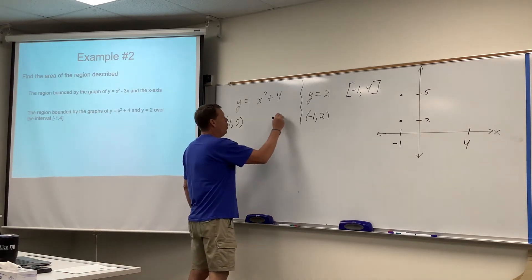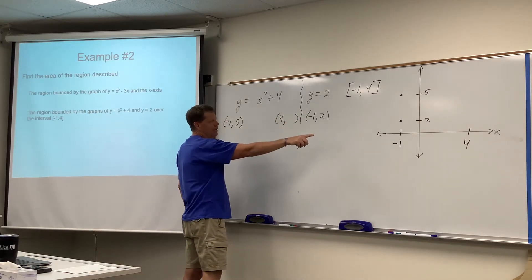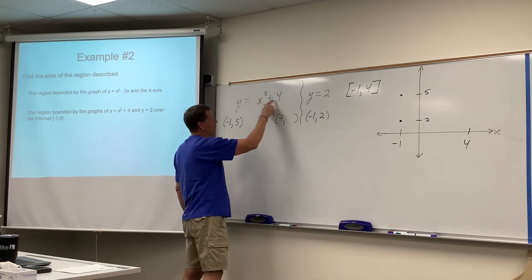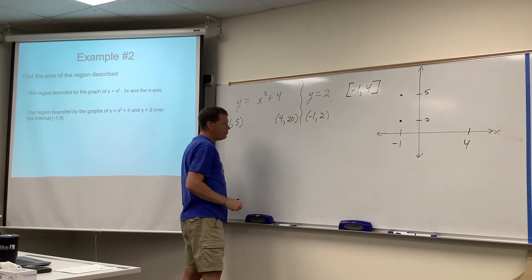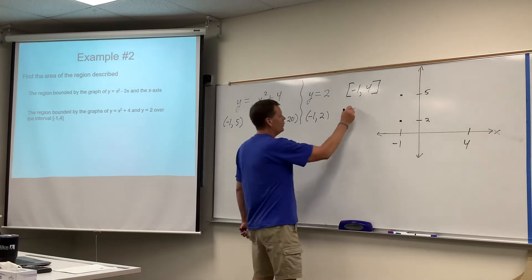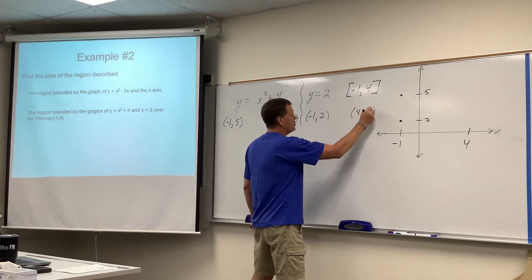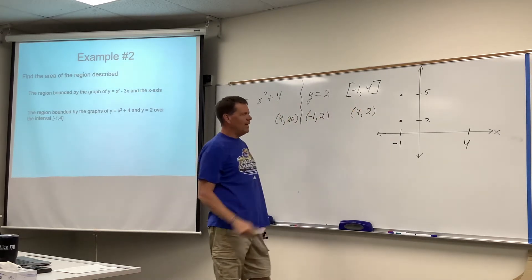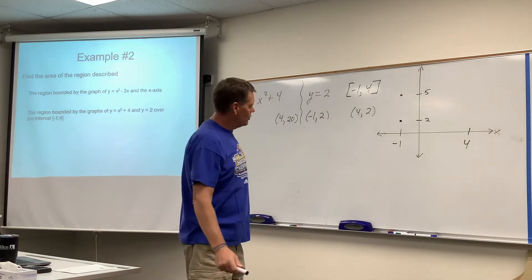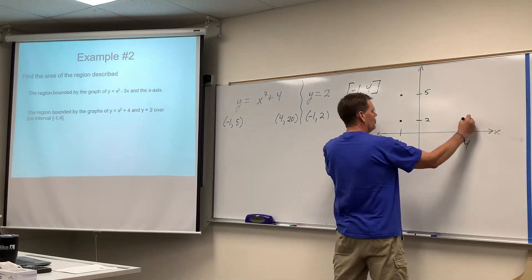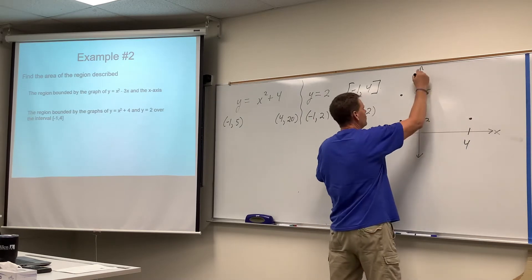All right, four, the other end, four squared is 16 plus four, that's 20, and four plugged in the other one is two, right? X isn't even in that equation. X always equals two. So over here at four, one of them plots with two, and the other one plots up here at 20.